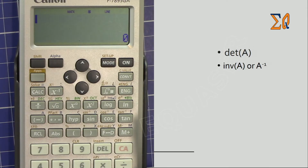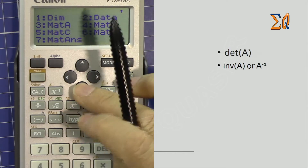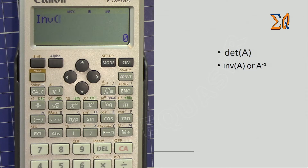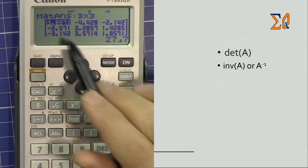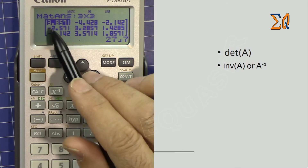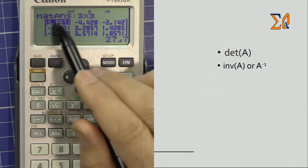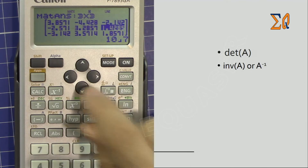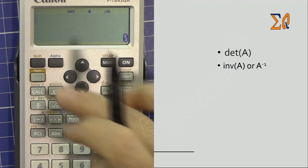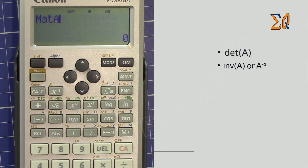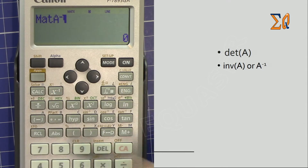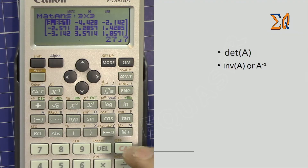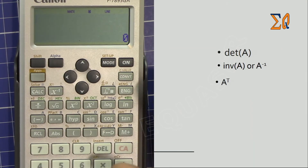To find the inverse of matrix A, press clear all, go to Apps and use the down arrow, then select number five for inverse. Bring matrix A by pressing Apps and number three. Press equal to get the inverse. The cursor shows each cell's value — the screen displays a rounded decimal, but the exact value appears when you navigate to each cell. You can also get the inverse by bringing matrix A and pressing the power of negative one key.